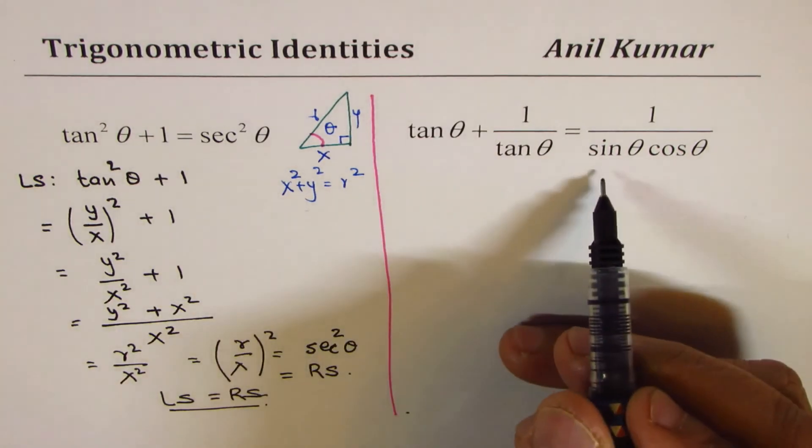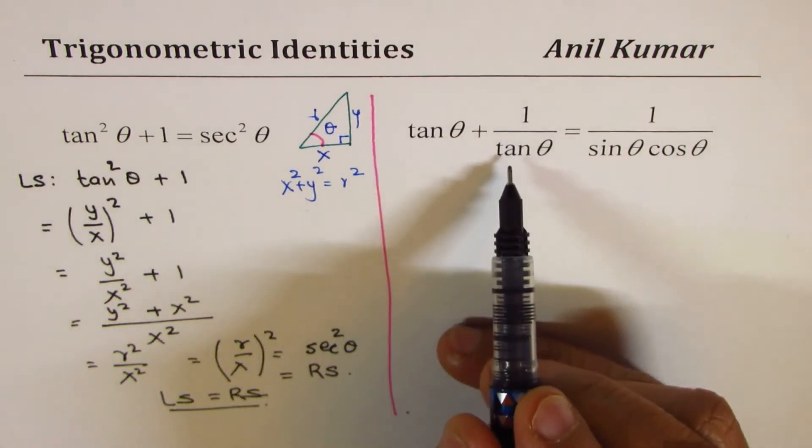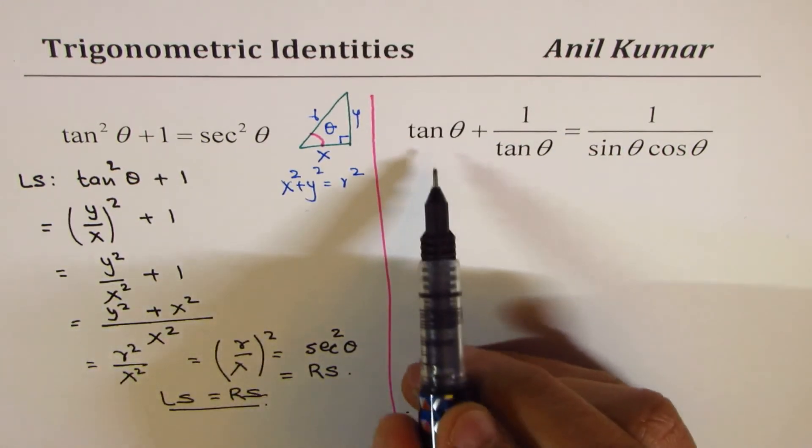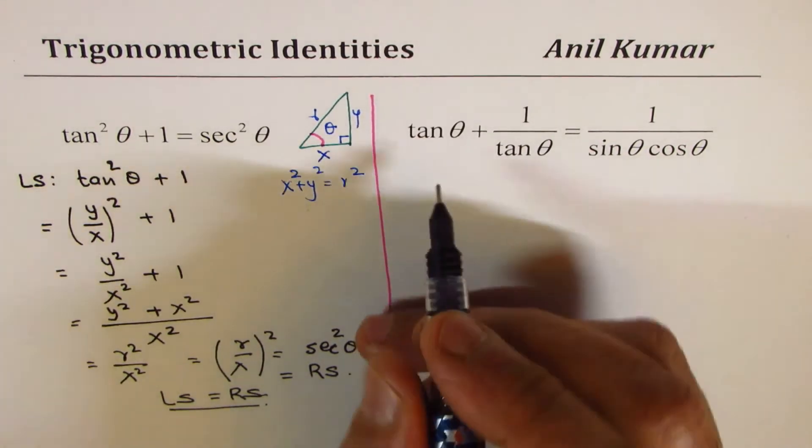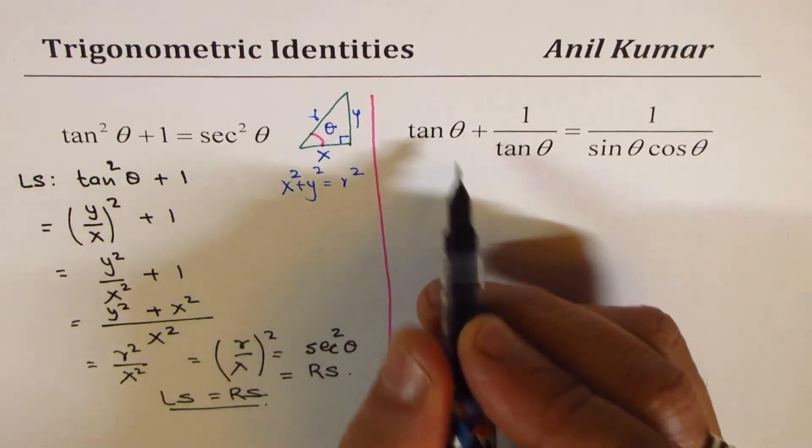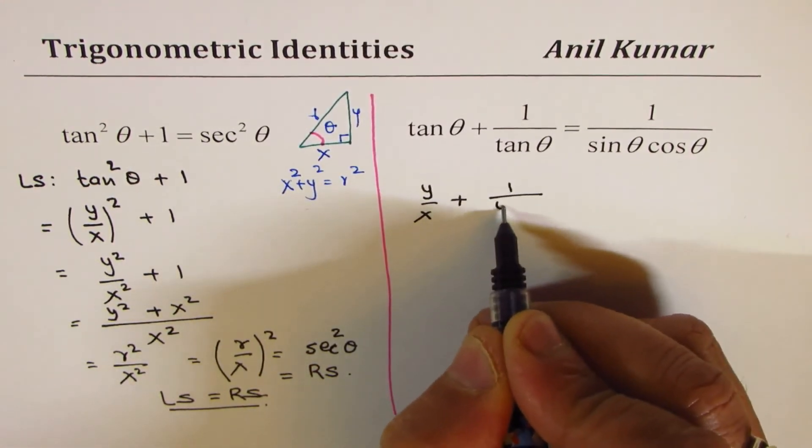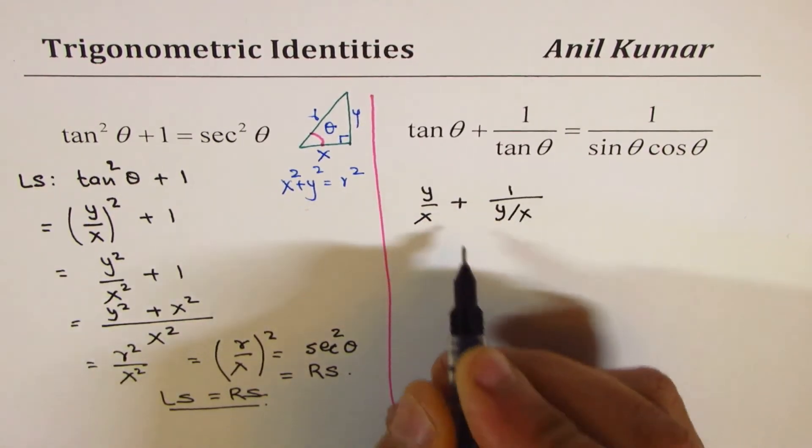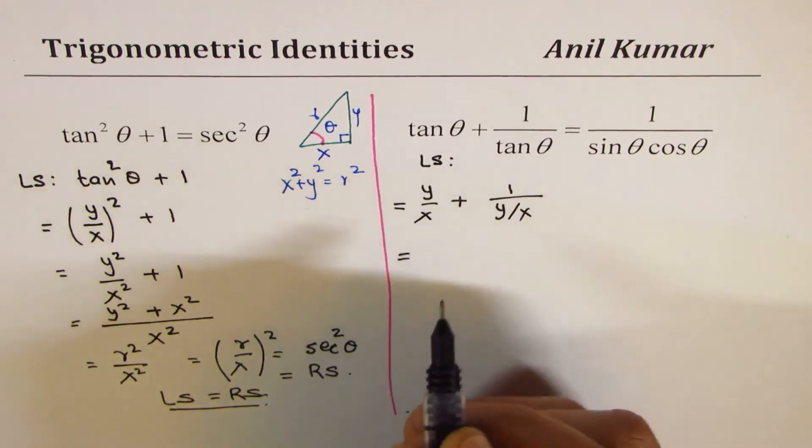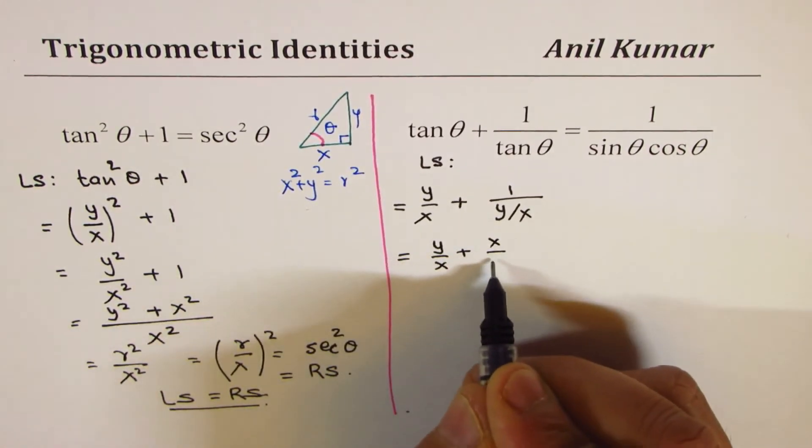Now, let's do the next one, which is the last in this series. Tan theta plus 1 over tan theta is 1 over sine theta cosine theta. So, again, starting from the left side, I can replace tan theta by y over x. So, we get y over x plus 1 over y over x, which I could write as, we began with left side.